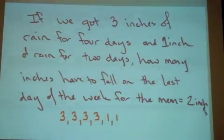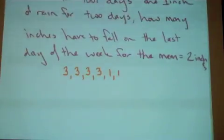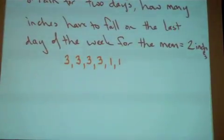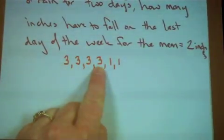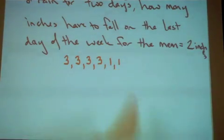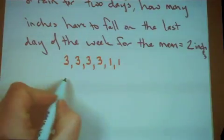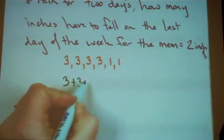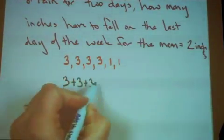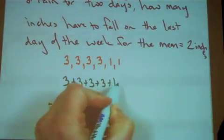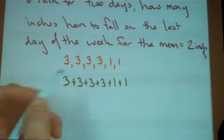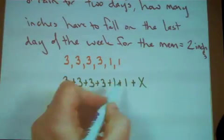Well, first I made myself that list. It said I should have four days of three inches and two days of one inch, and what I want to do is figure out what that last day would have to have for rainfall to get the particular mean of two inches.